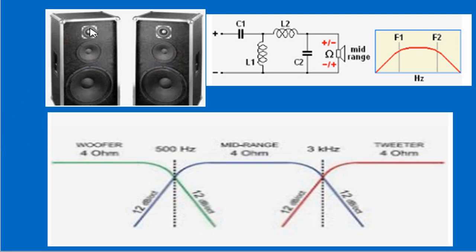Con un altoparlante solo non possiamo coprire quella gamma, quindi bisogna mettercene tre. Queste due casse, una a destra e una a sinistra, se l'impianto è stereo, devono essere filtrate correttamente. Per fare questo noi dobbiamo mettere dei filtri.